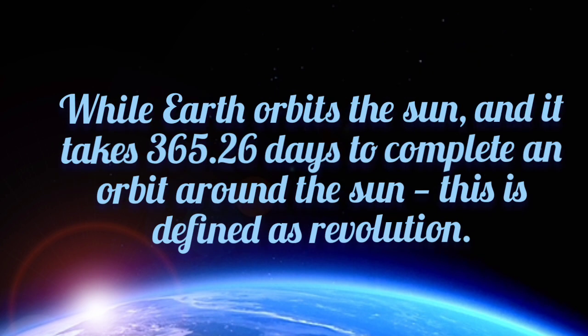While Earth orbits the sun, it takes 365.26 days to complete an orbit around the sun, and this is defined as a revolution.